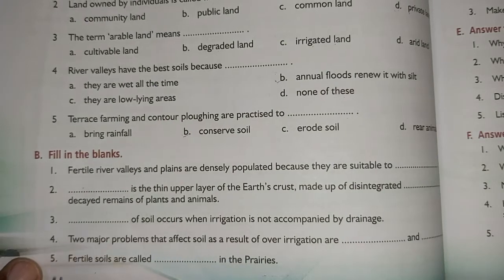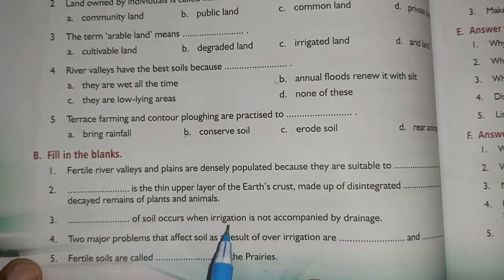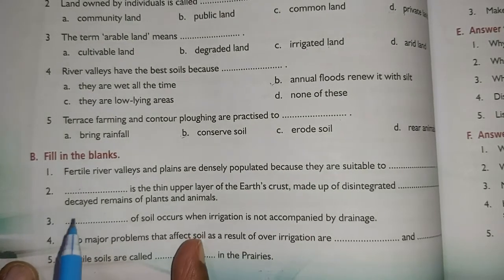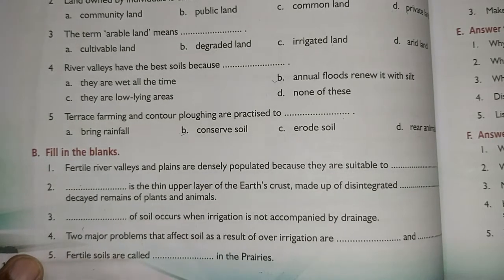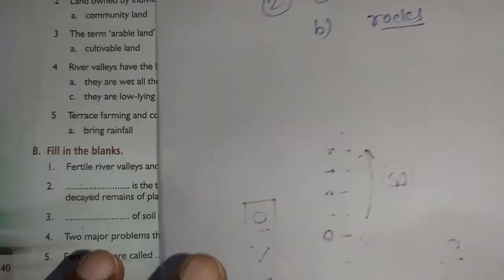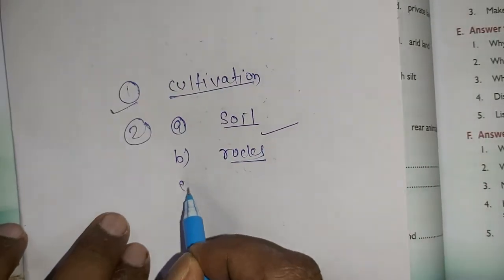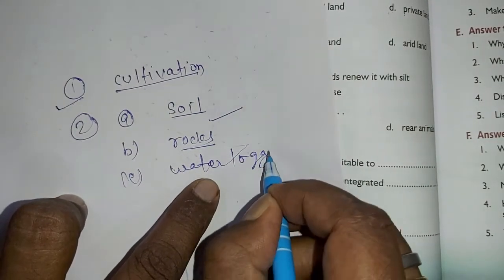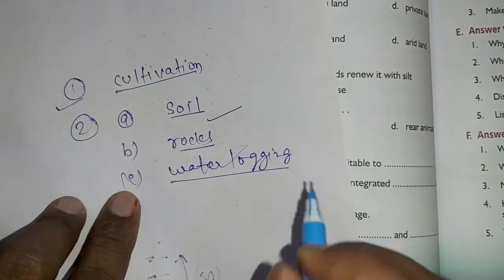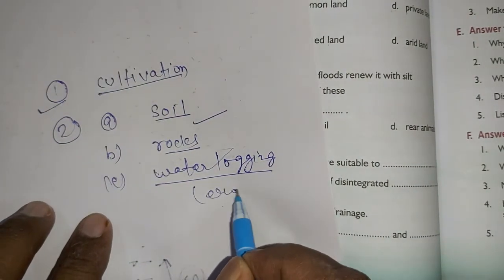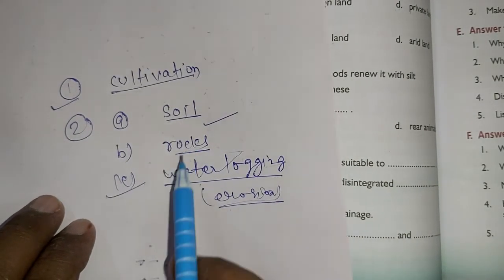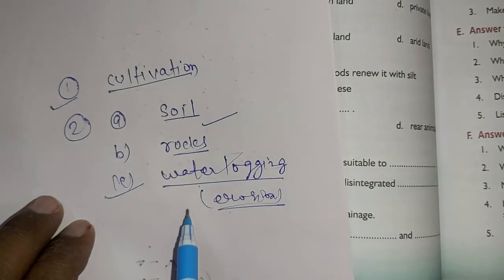The third question: dash of soil occurs when irrigation is not accompanied by drainage. When irrigation is not accompanied by drainage, water logging occurs, and because of this water logging, soil degradation happens. The answer is water logging — W-A-T-E-R L-O-G-G-I-N-G.